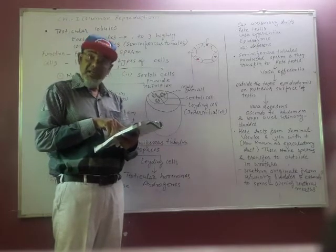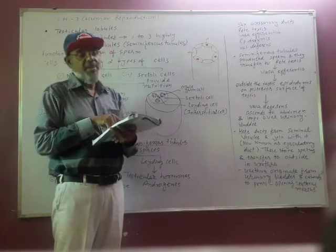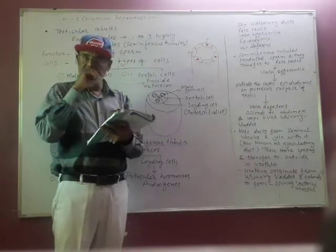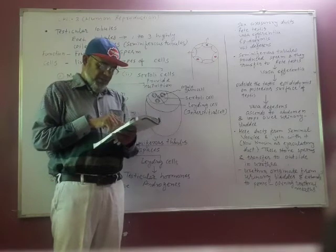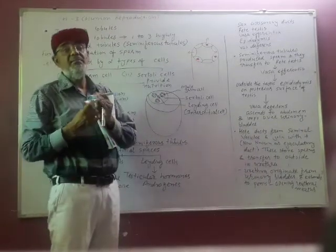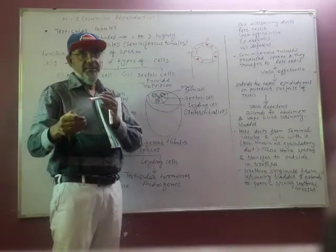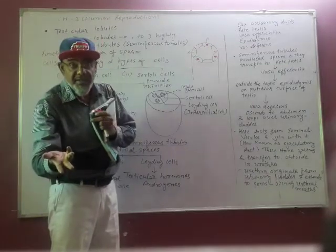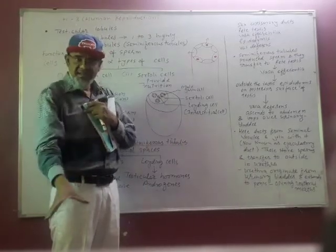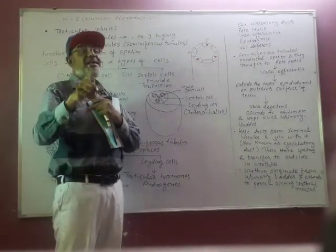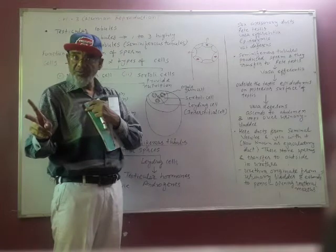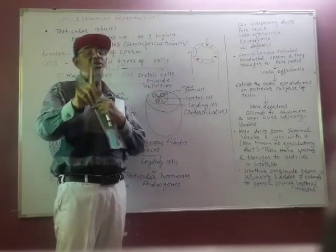The second type is the Sertoli cells. You may be asked to differentiate between the two types of cells present in the seminiferous tubules. The male germ cells undergo meiotic division — that is the reduction division. The question may ask why they undergo reduction division. The answer is simple: because these are normal body cells. Normal body cells contain 46 chromosomes, meaning 23 pairs.